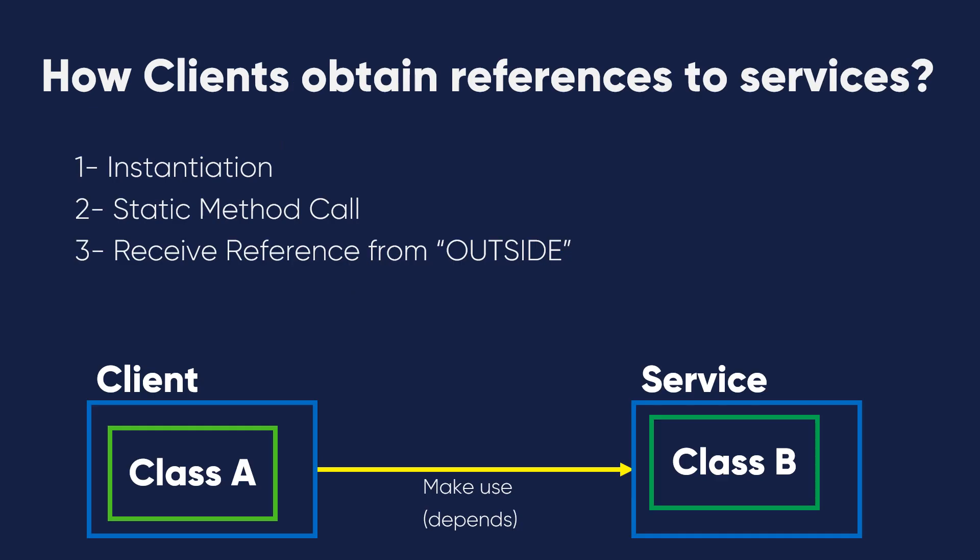How do clients obtain references to the services? As I told you in the previous videos, there are three ways to instantiate objects and pass them to the methods or classes. The first one is instantiation — making a new reference. The second is a static method call. The third is receiving a reference from outside.